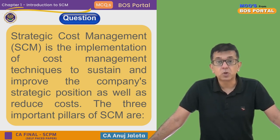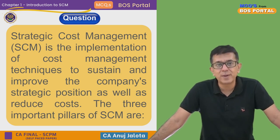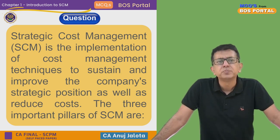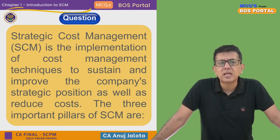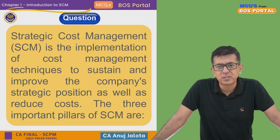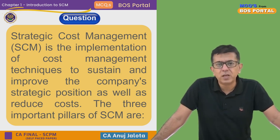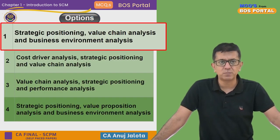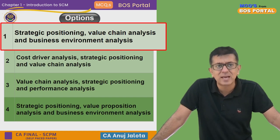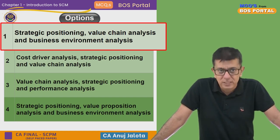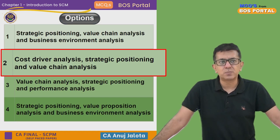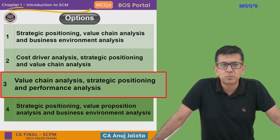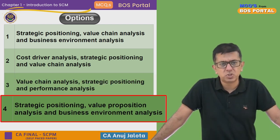The question for today is: 'Strategic cost management is implementation of cost and management techniques to improve and sustain the company's strategic position as well as reduce the cost. The three important pillars of SCM are?' The four options are: (A) strategic positioning, value chain analysis, and business environmental analysis; (B) cost driver analysis, strategic positioning, and value chain; (C) value chain, strategic positioning, and performance analysis; (D) strategic positioning, value chain, and business environment analysis.